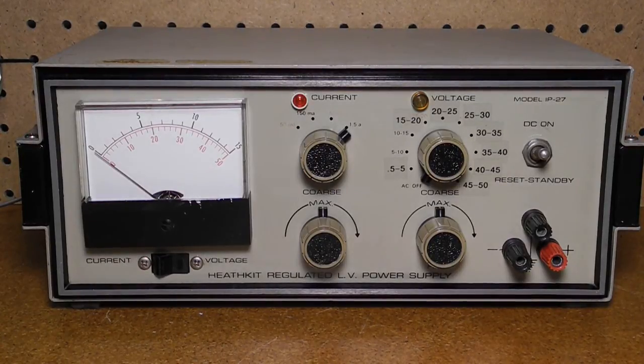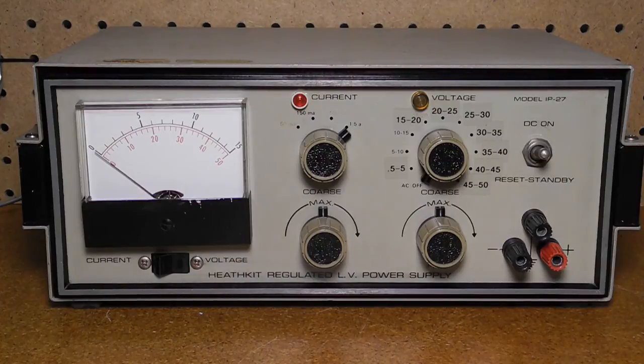A front panel meter shows output voltage or current depending on the position of the switch below it, with neon lamps indicating the mode.